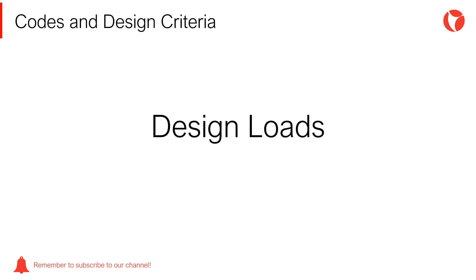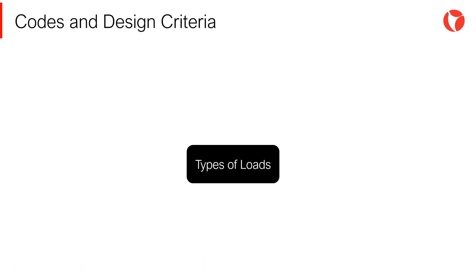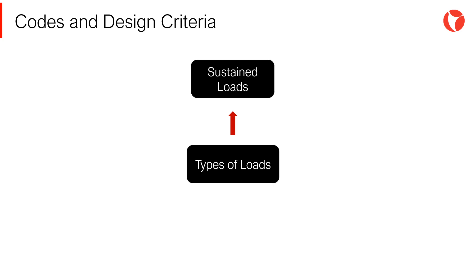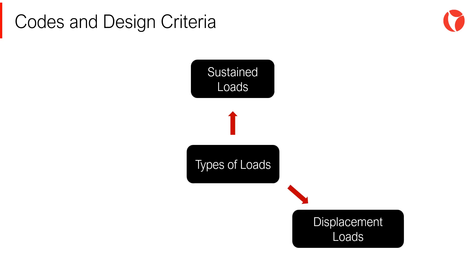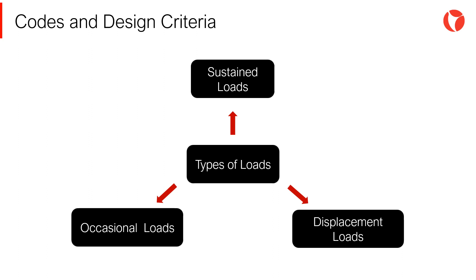There are different types of loads coexisting in a piping system which the piping designer must analyze, then select the most restrictive combination for the system — such as the hydraulic testing condition or the operation condition. In a piping system, there are three types of loads: sustained loads, displacement loads, and occasional loads.